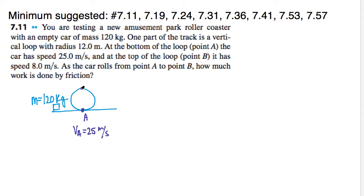At the bottom of the loop, point A, the car has a speed of 25 meters per second, so VA = 25 m/s. At the top of the loop, point B, the speed is 8 meters per second, so VB = 8 m/s. Also, I forgot the radius part — we have a radius of 12 meters, so R = 12 meters.